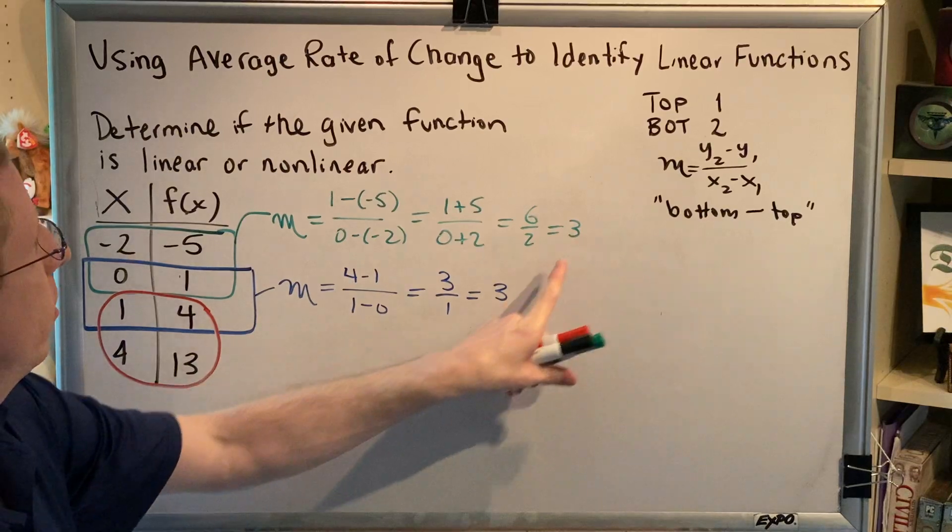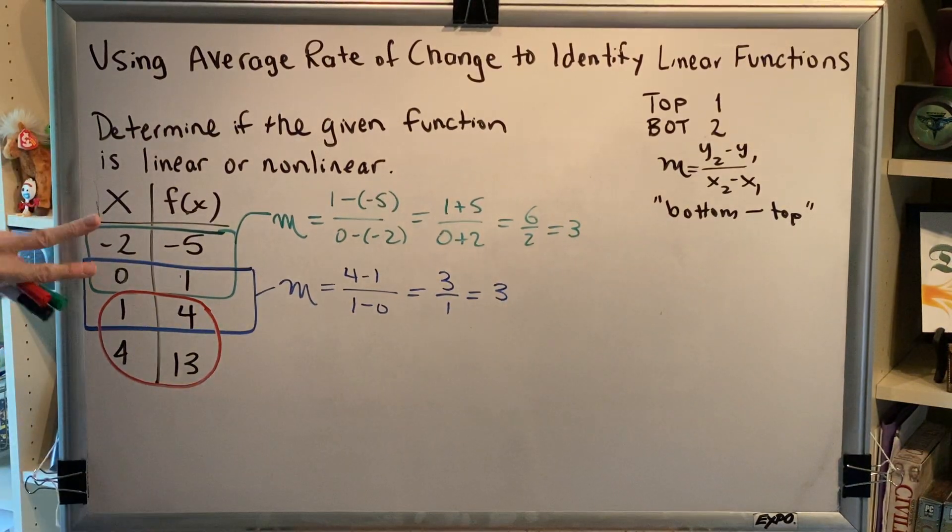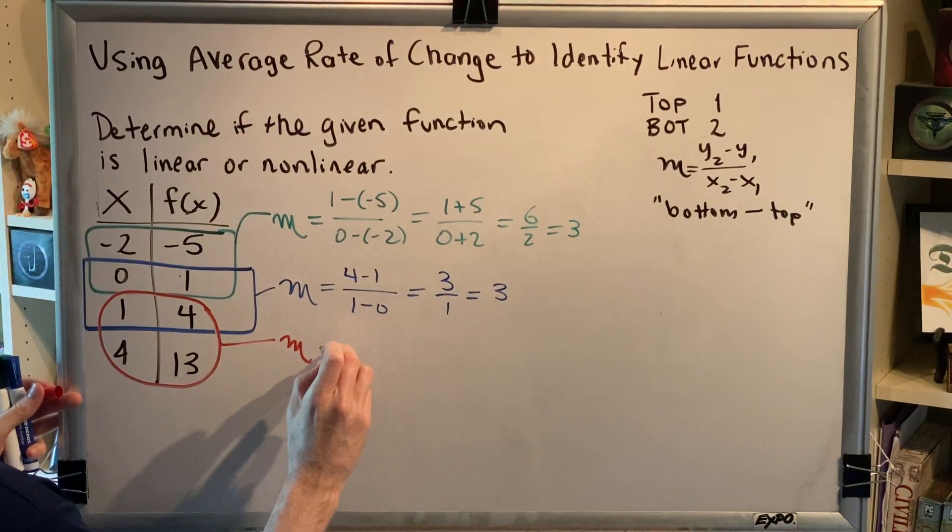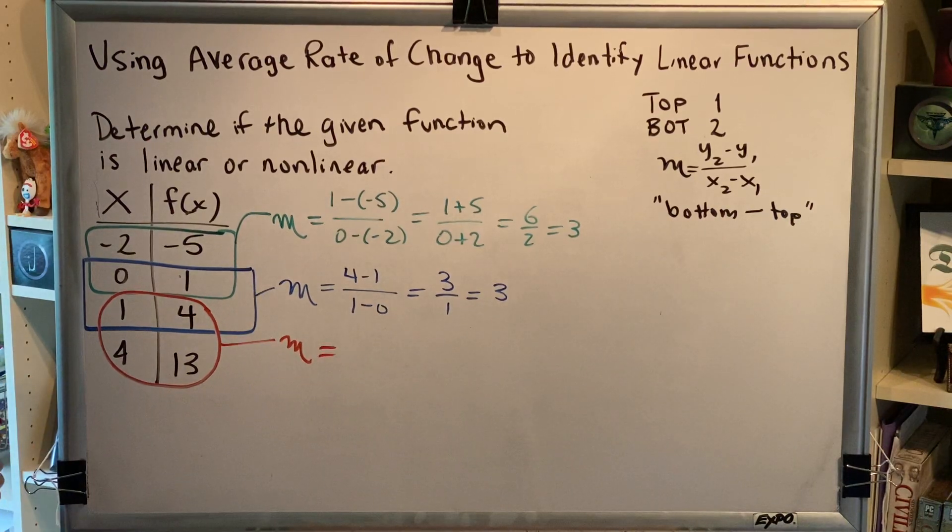Notice that we got the same slope for these two pairs of adjacent points. So far, it's looking like this might be a linear function, but we don't know for sure until we compare all pairs of adjacent points, and we have one pair left to go.